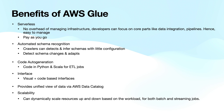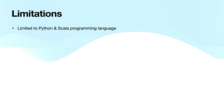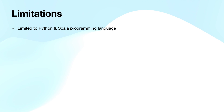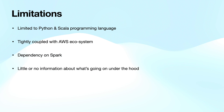Since we talked about the pros, let's have a look at the cons. AWS Glue is limited to Python and Scala programming languages, so anyone wanting to use AWS Glue should have a fair understanding of Python and Scala. ETL jobs need modification when schemas are updated. AWS Glue is tightly coupled with the AWS ecosystem and is also dependent on Apache Spark. Finally, we would have little or no information about what's going on under the hood.